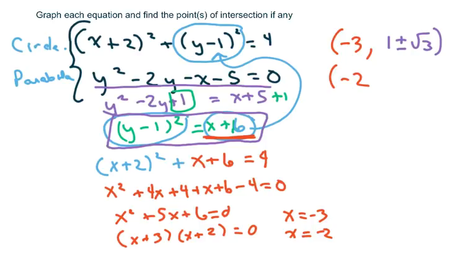And when you plug in the negative 2, you're going to get y is negative 1 or y is negative 3. So there's your 4 solutions.